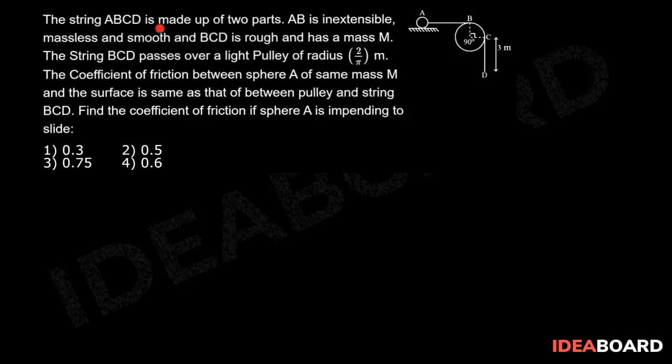The string ABCD is made up of two parts. AB is inextensible, massless and smooth, and BCD is rough and has a mass capital M.